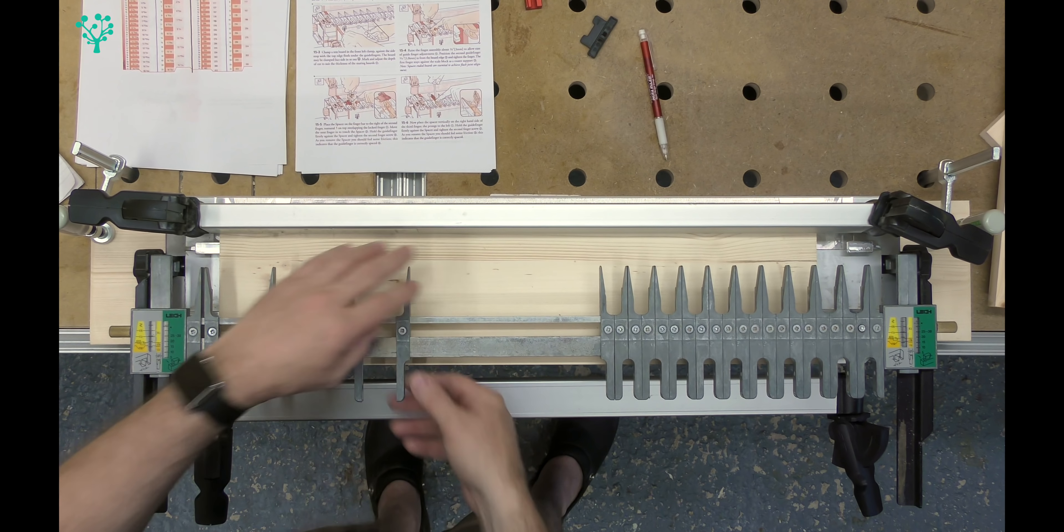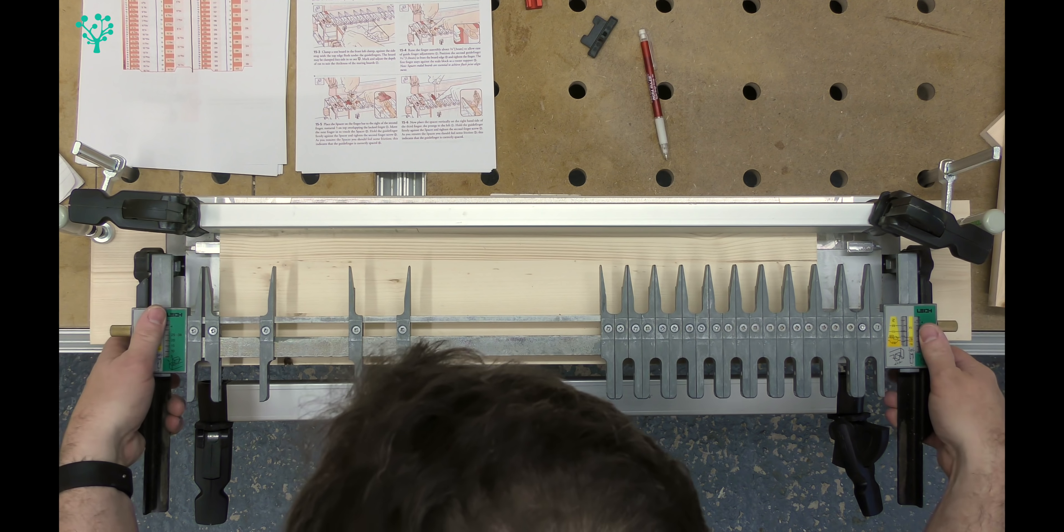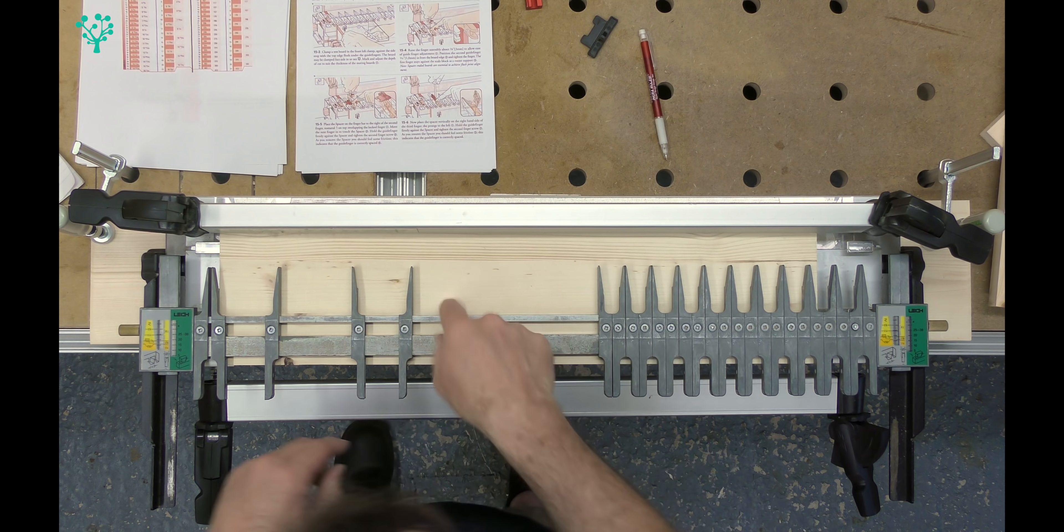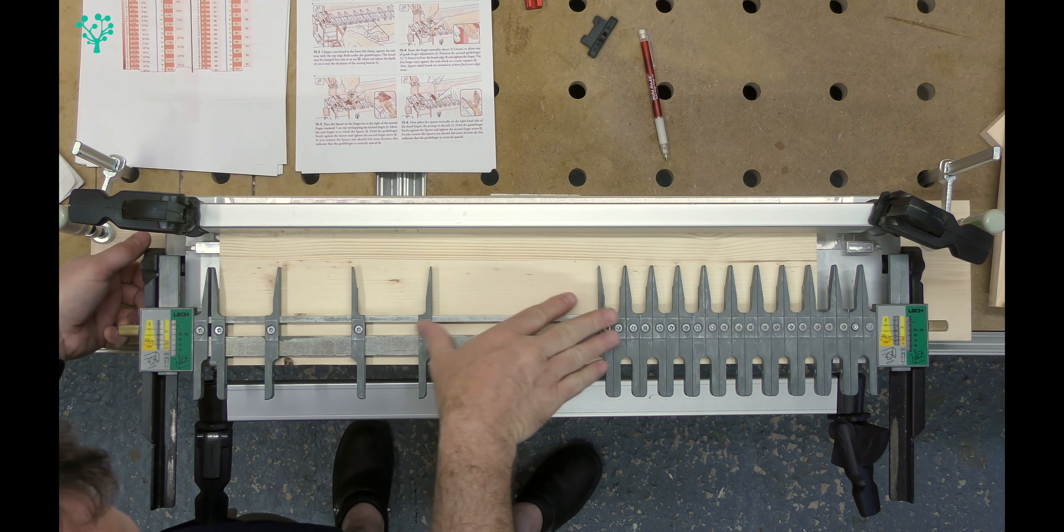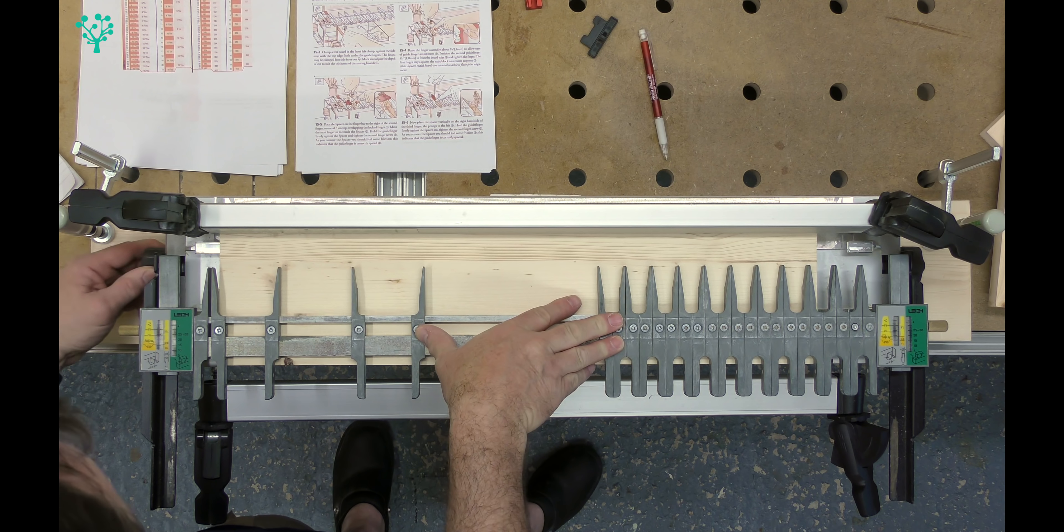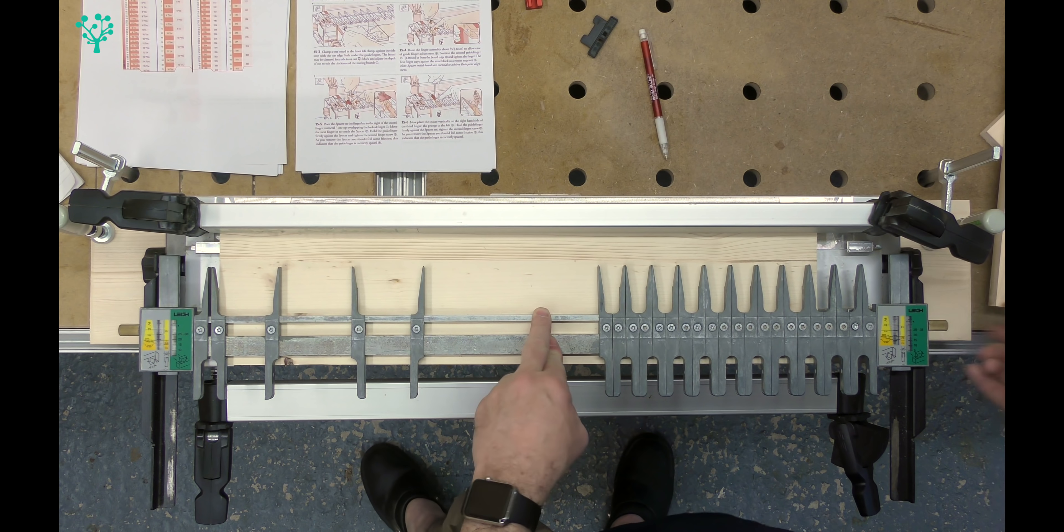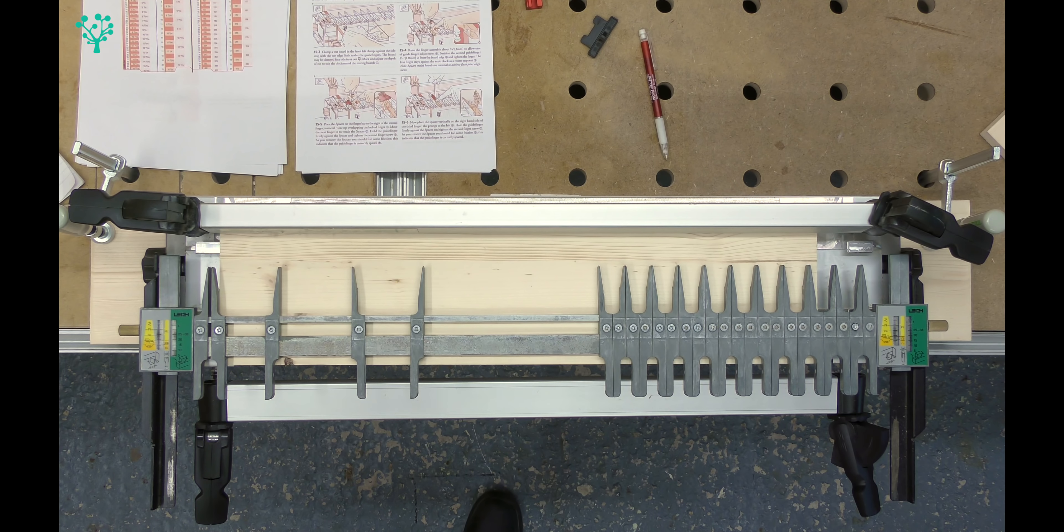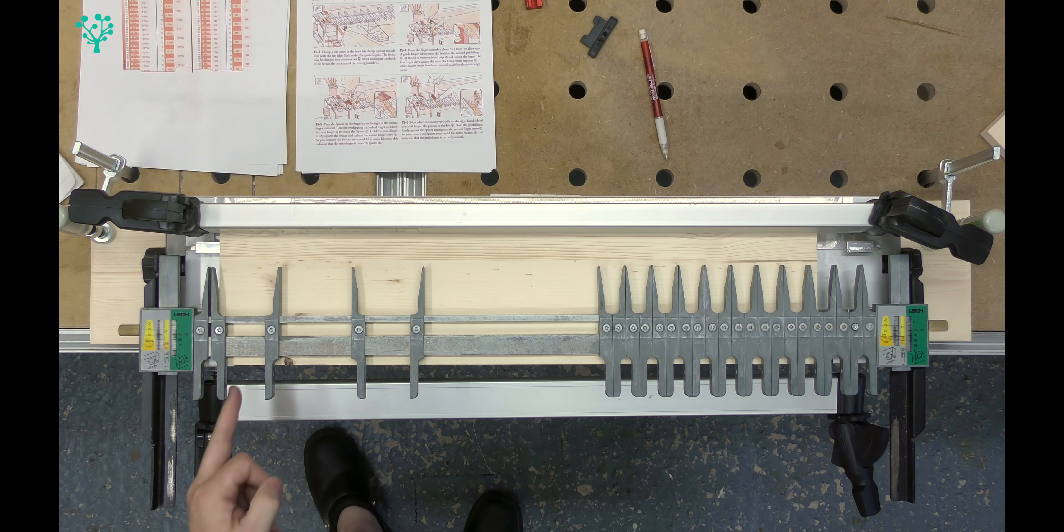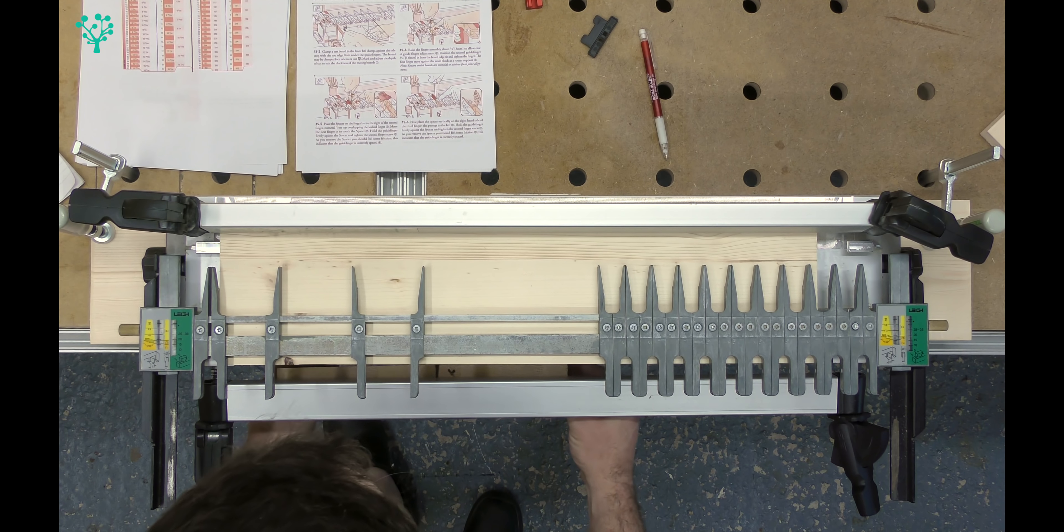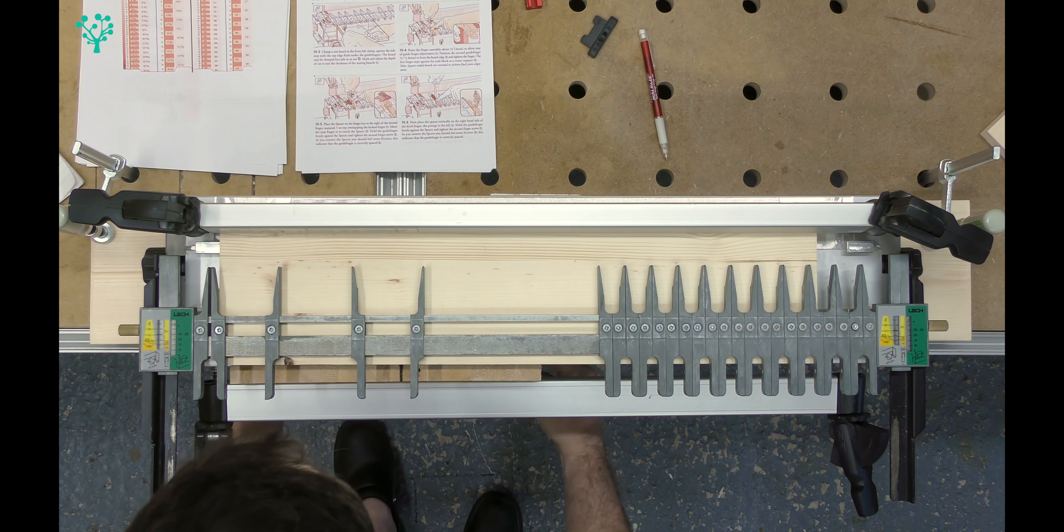So this in theory would be the width of the board that we'd want to use on our project. The way that we set this up, lower the fingers so they are resting on that backing board that you've just put into place. Small bit of pressure to make sure it's flat and just lock that down on both ends.